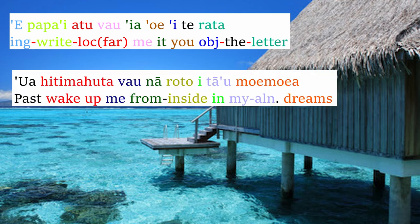The second example: Ua hiti mahuta vau na roto i ta'u moe moea. Ua is a past tense marker. Hiti mahuta is 'to wake up,' vau is 'me,' na is 'from,' roto is 'inside,' i is 'in,' ta'u is 'my' in the A form, and moe moea is 'dreams.' So this sentence means: It woke me up from my dreams, or I was woken up from my dreams.